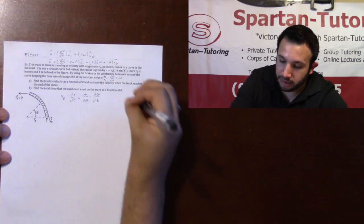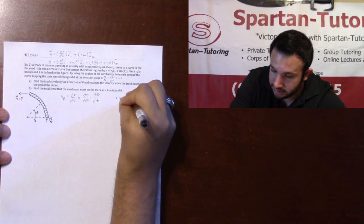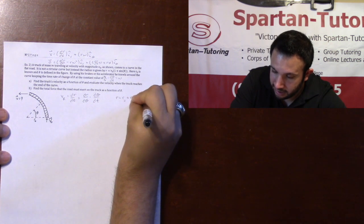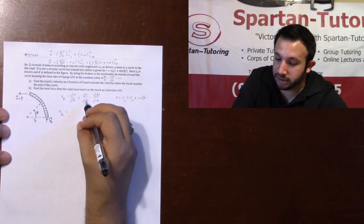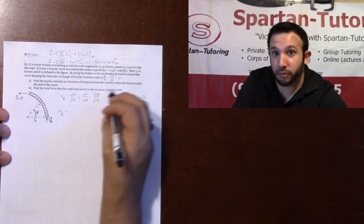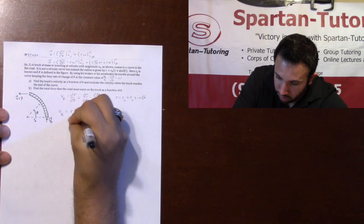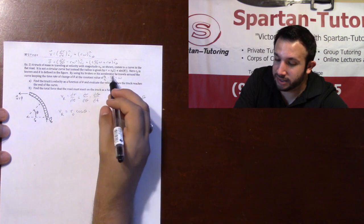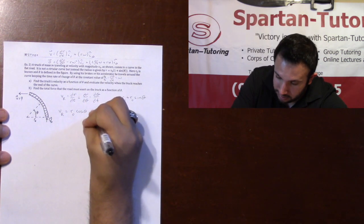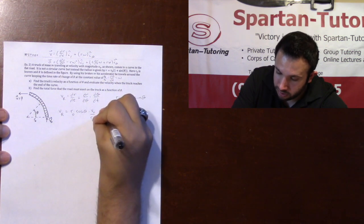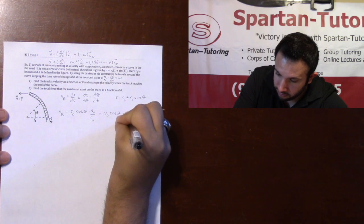My r is equal to — I'll distribute the r-naught — r-naught plus r-naught sine theta. So my v-r, which is dr/dθ — taking the derivative of r with respect to theta — is going to be r-naught cosine theta. And we already saw that dθ/dt is v-naught over r-naught. So it's v-naught over r-naught times r-naught cosine theta, which is just v-naught cosine theta. So this is my v-r.